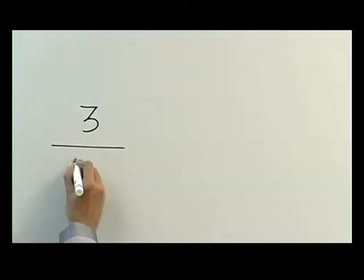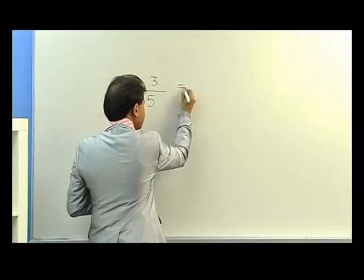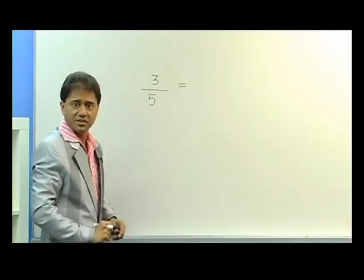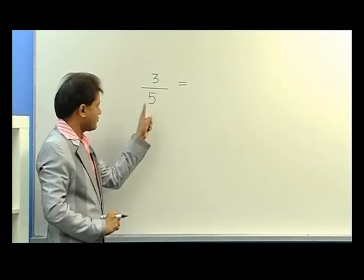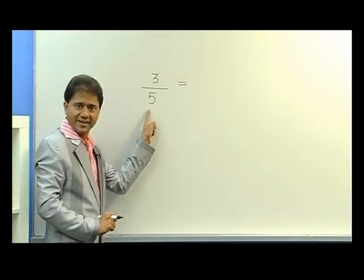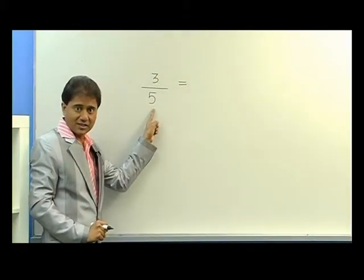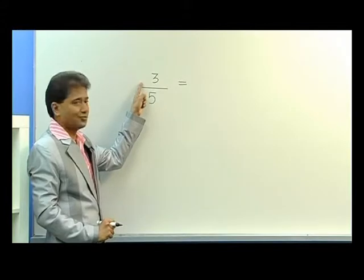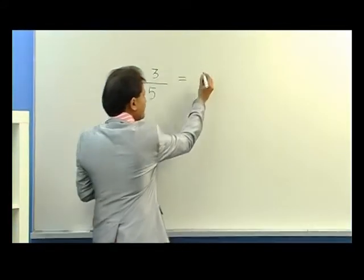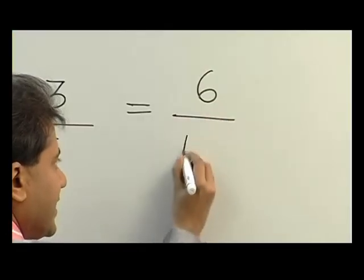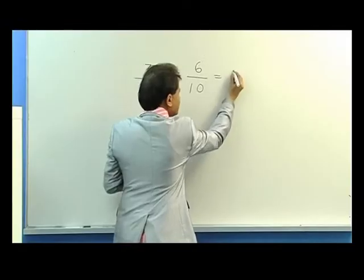All you have to do is make this denominator ten. Now you have five, how do you make it ten? You just times it by two. But you all know if you times here by two, you need to times here also by two. So this becomes six over ten.